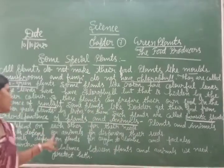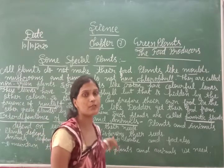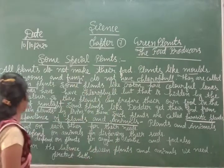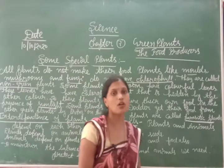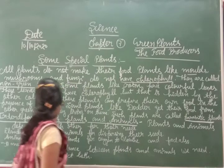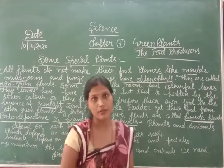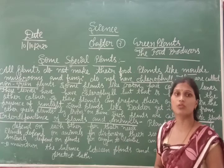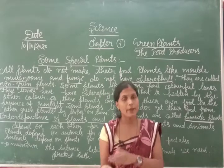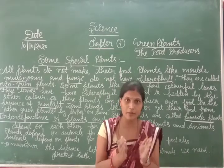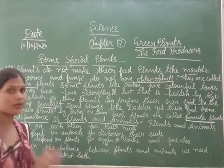Plants also depend on animals for dispersing their seeds — this is called seed dispersal, which means the scattering of seeds. Animals depend on plants for oxygen to breathe and for food. Both animals and plants depend on each other and maintain a balanced proportion, which helps balance our ecosystem.